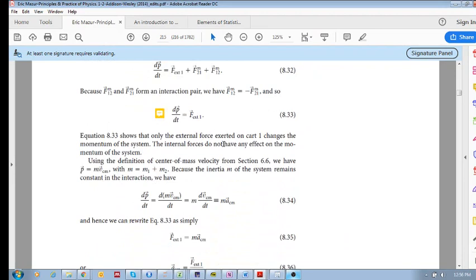So from chapter 6.6, we have that momentum is equal to m, inertia, times the velocity of the center of mass. Where the mass, the inertia is equal to m1 plus m2 because we have two carts. And the inertia in this system remains constant. So your time rate of change of your momentum is equal to d/dt of m times the center of mass velocity. And if you work it out, it becomes this.